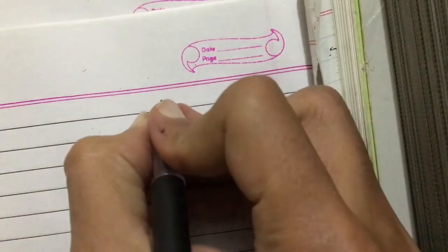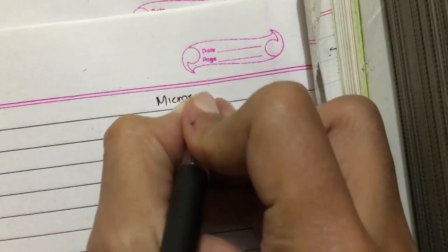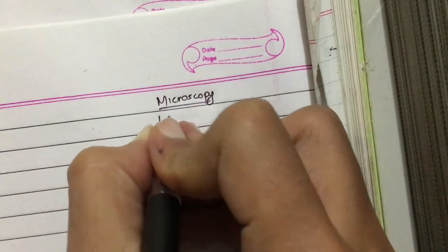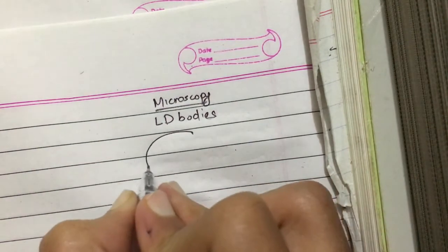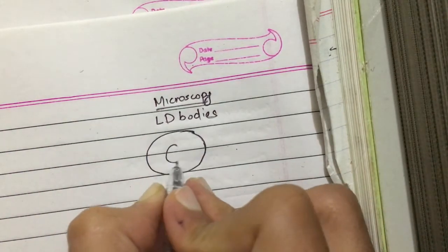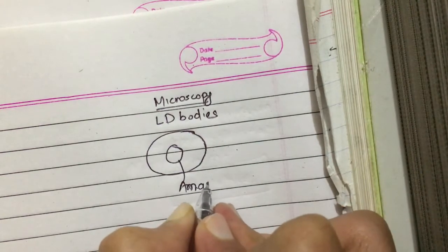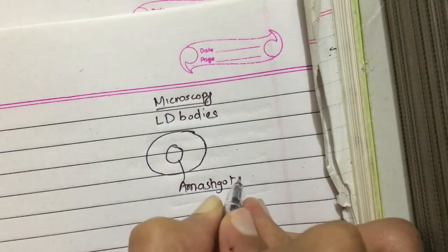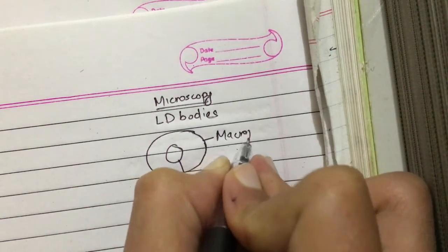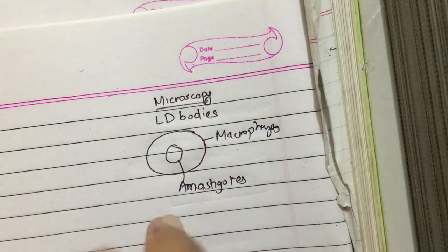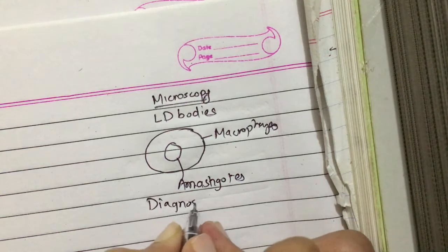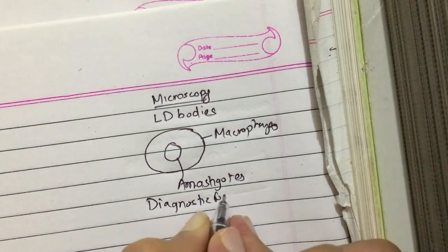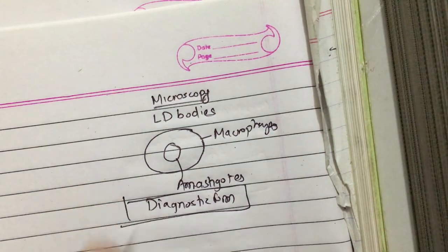If we do microscopy, we can see LD bodies. LD bodies are the amastigotes which are present inside macrophages. These are called LD bodies and this is the diagnostic form in the human. We can see LD bodies on microscopy.